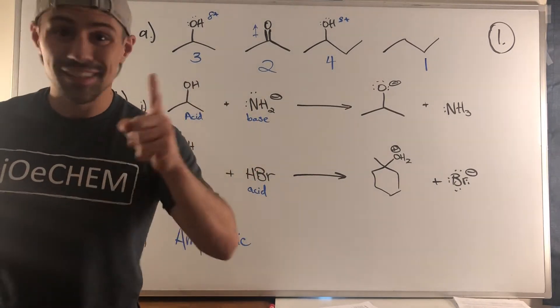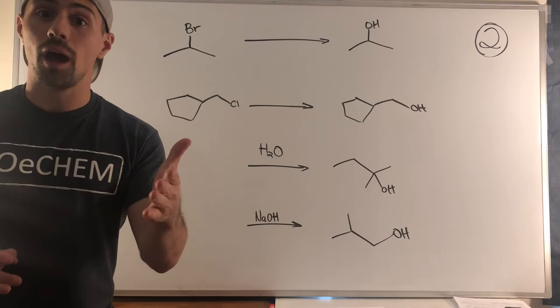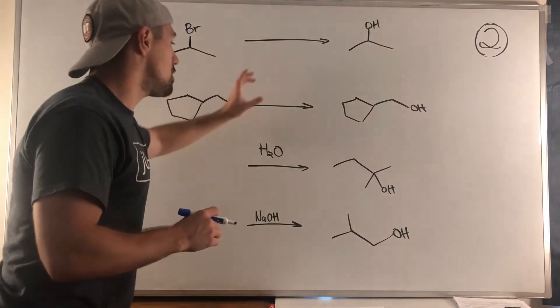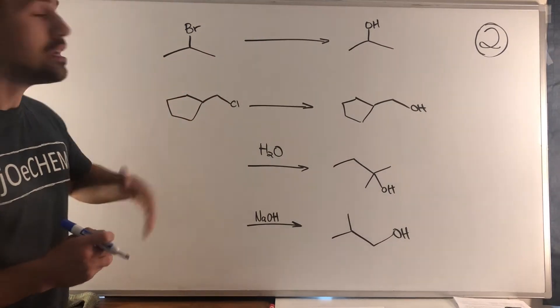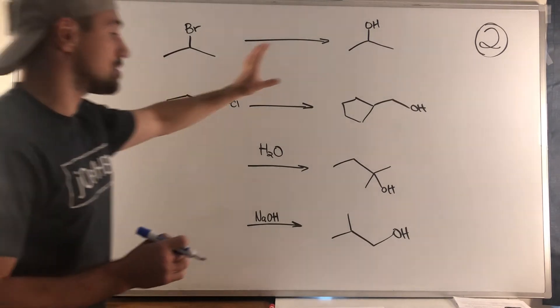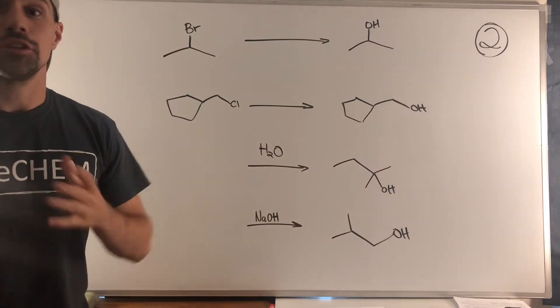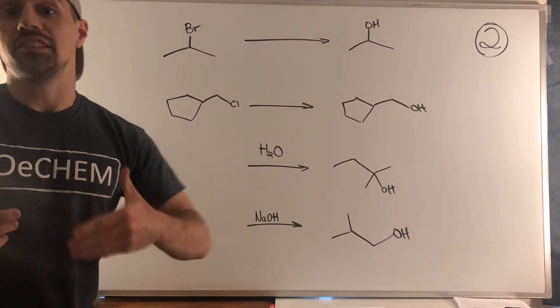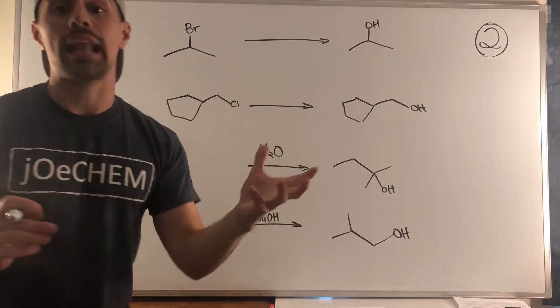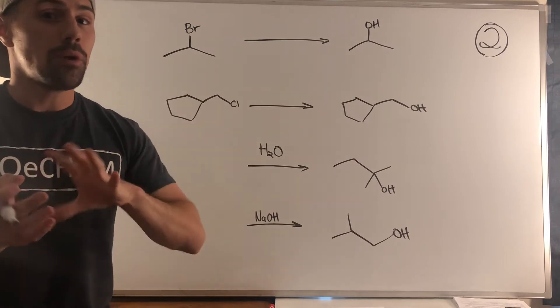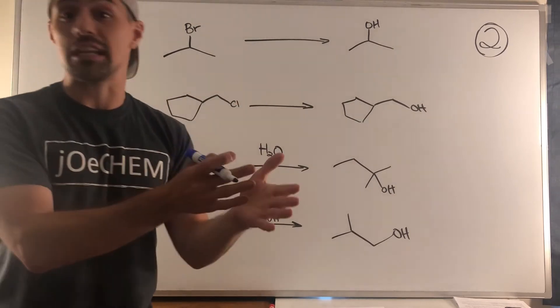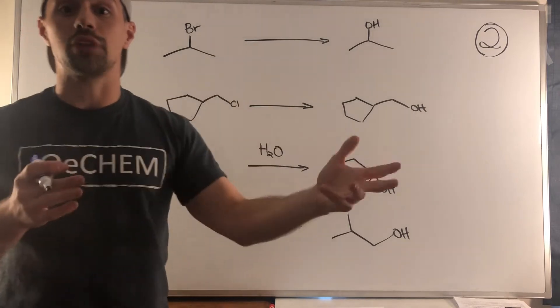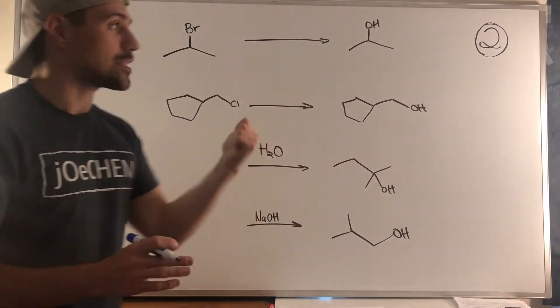In problem two we are tasked with either filling in the reagent or providing starting material in these alcohol synthesis reactions. You're gonna see very soon when we start synthesis problems you might need to do simple transformations to create an alcohol, so you might use SN1 or SN2.